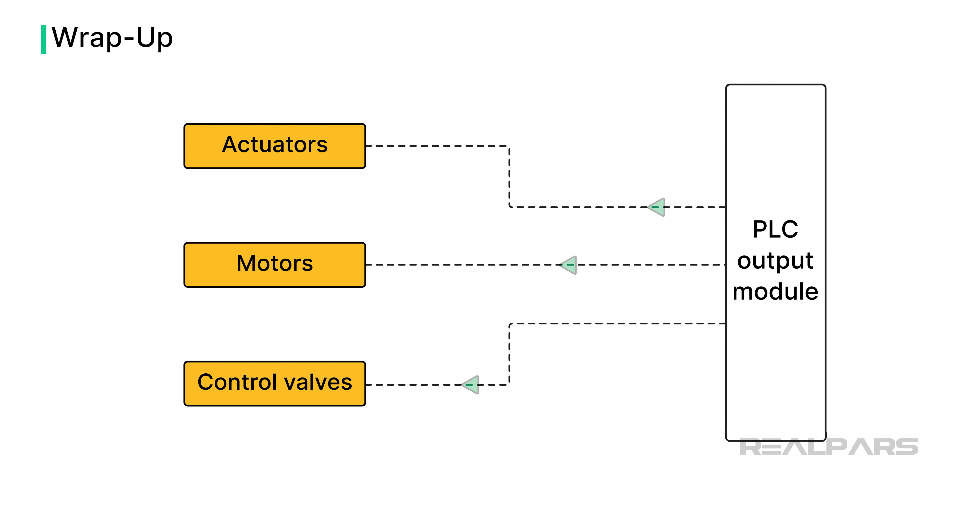Analog PLC outputs control devices such as actuators, motors, and control valves. Usually the module itself does not provide the drive for the controlling device, only the control signal.